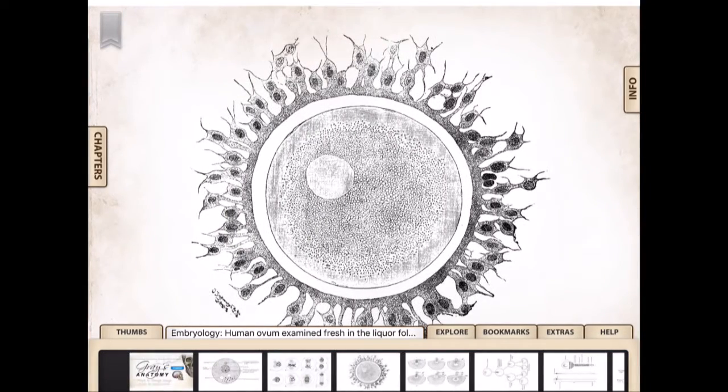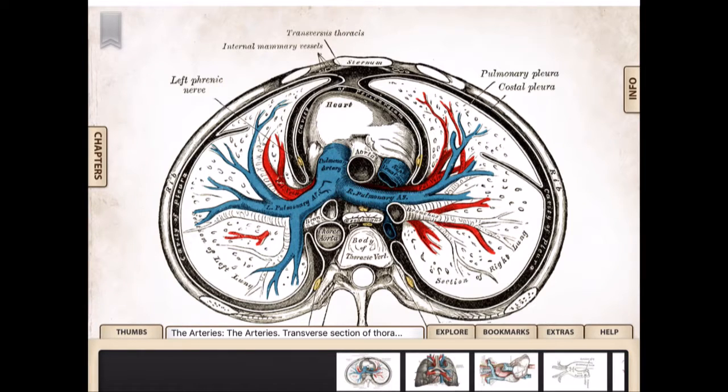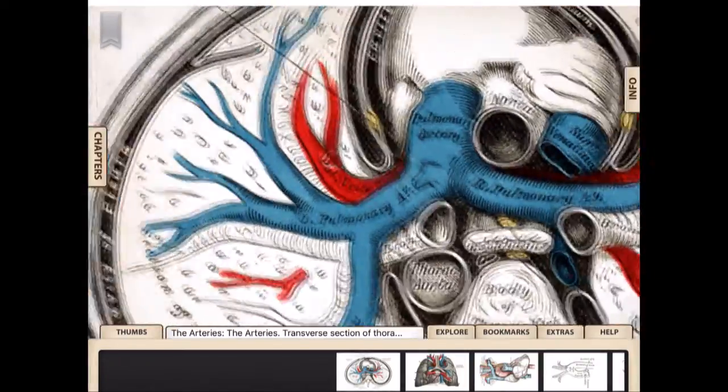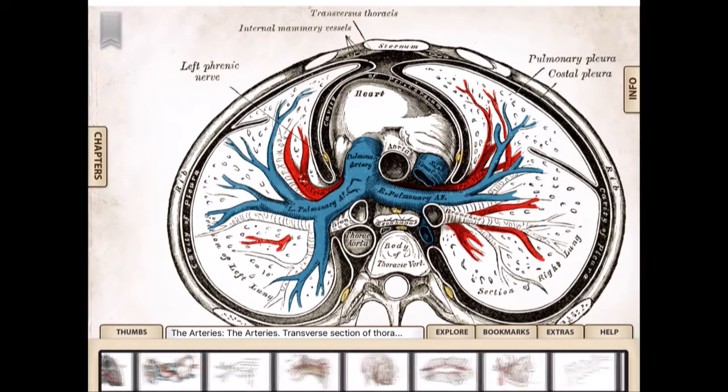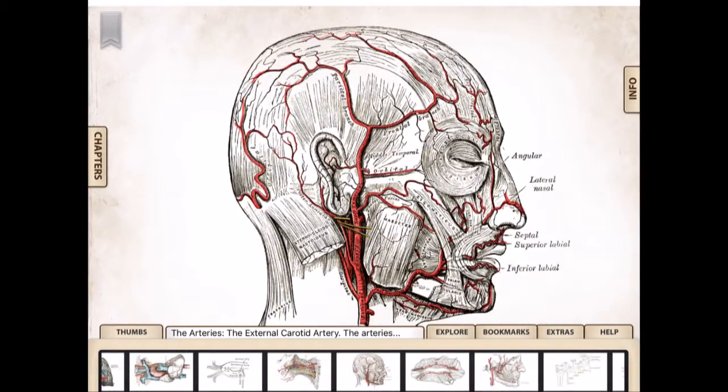Or I can go into this tab on the left-hand side and choose chapters. So if I want to have a look at say the arteries, I click the arteries and it automatically takes me to the part of Gray's Anatomy for the arteries. And again, in here I can zoom in, I can move it around to have a look at different areas, I can scan across left and right, bring up a different image.